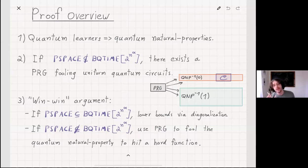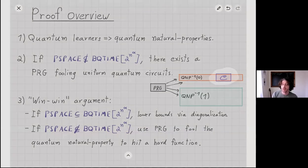The idea is we can take the pseudorandom generator and use it to generate the outputs of a function. The gist here is that because the natural property is a quantum algorithm that is being fooled by the pseudorandom generator, then the algorithm has no way of distinguishing between that and random. That means we can show that we'll actually hit a hard function, which is outside of C, the class that we actually care about.